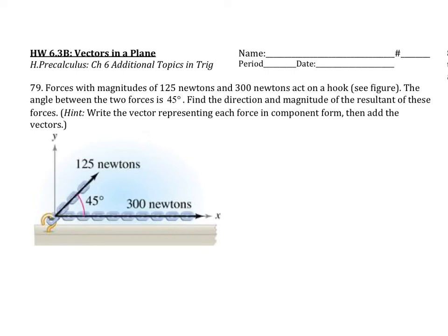This is number 79 for 6.3. Forces with magnitudes of 125 newtons and 300 newtons act on a hook, like here in this picture. The angle between the two forces is 45 degrees. Find the direction and magnitude of the resultant of these forces.